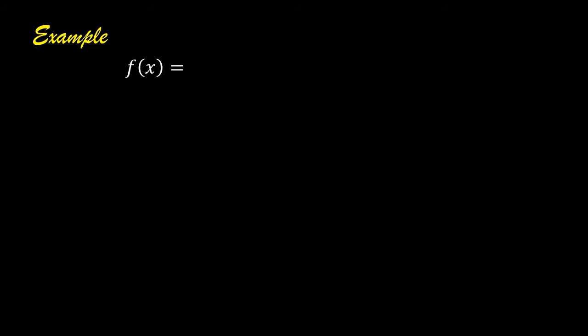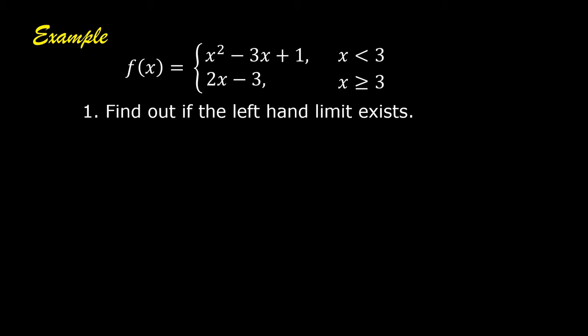Example: f(x) is equal to x squared minus 3x plus 1 if x is less than 3, and is equal to 2x minus 3 if x is greater than or equal to 3. Number one: find out if the left-hand limit exists.